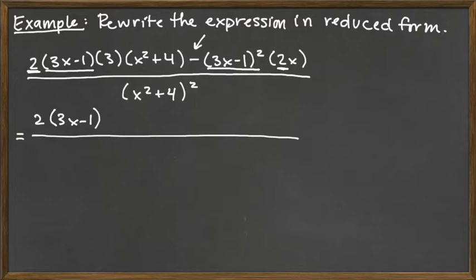Likewise, that factor x squared plus 4, it only appears before the subtraction sign, not after it, so we can't pull it out as the greatest common factor. Okay, so our greatest common factor there for the two terms would be our 2 times our 3x minus 1.